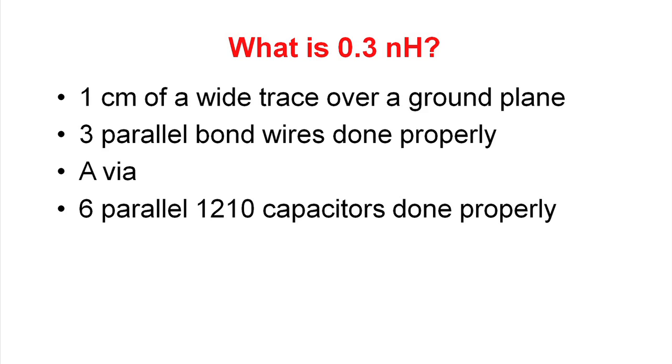So what is 0.3 nanohenries? It's one centimeter of a wide trace over a ground plane, or three bond wires done properly. When I say properly, that means the ground and source are interleaved, which reduces some of the mutual inductance in the path.